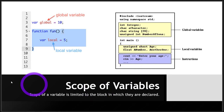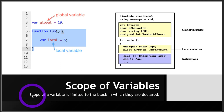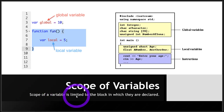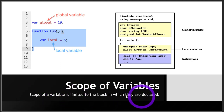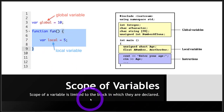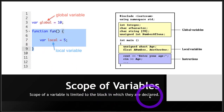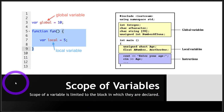So the summary is that the scope — or the usage of a variable — is limited to the block in which it is declared. By block, we mean curly braces. It is limited to that block and cannot be used outside of it.